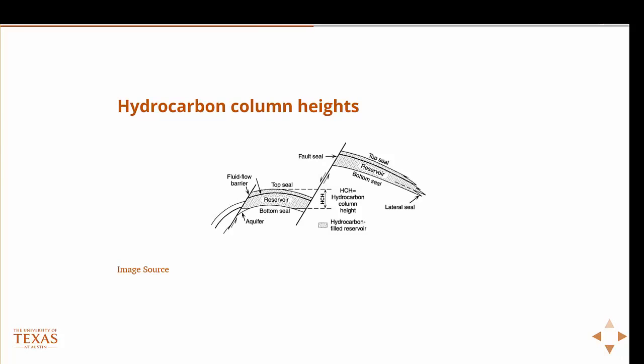Another mechanism for overpressure is hydrocarbon column heights. We all know that hydrocarbons are more buoyant than water — anybody who's spilt a drop of oil when it's raining while changing their car oil knows it floats and creates a little slick. We don't even have to be that imaginative because we all know about what happened a few years ago in the Gulf of Mexico. So hydrocarbons are more buoyant than water.